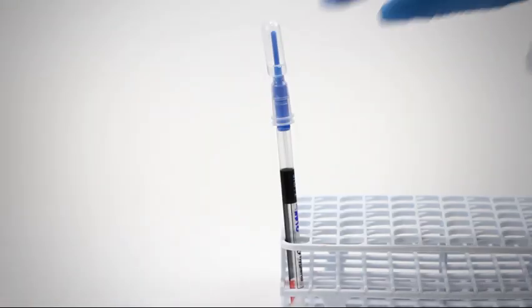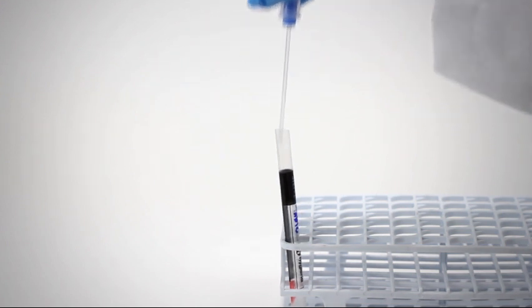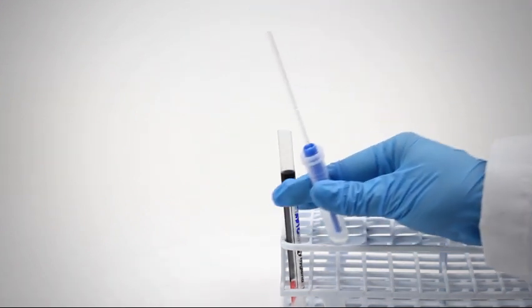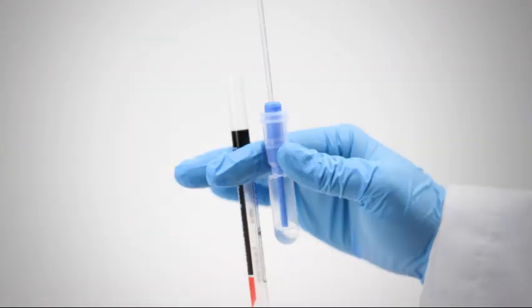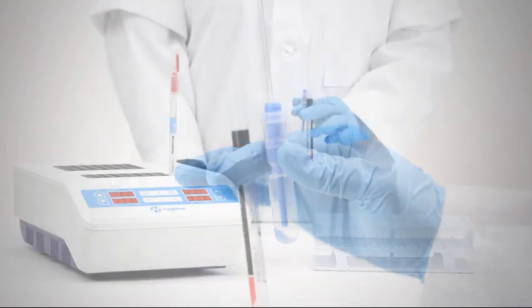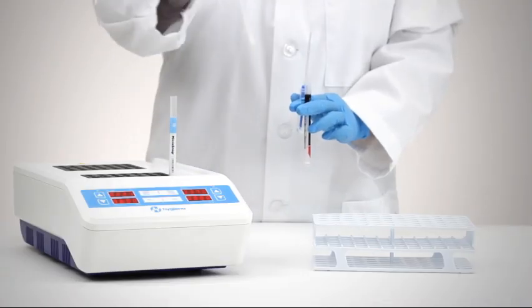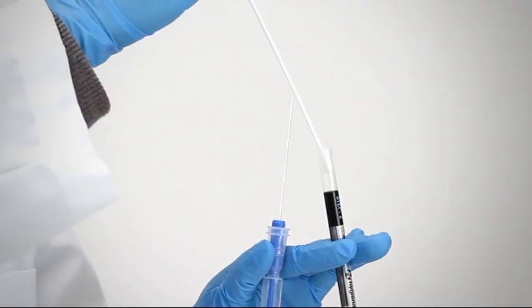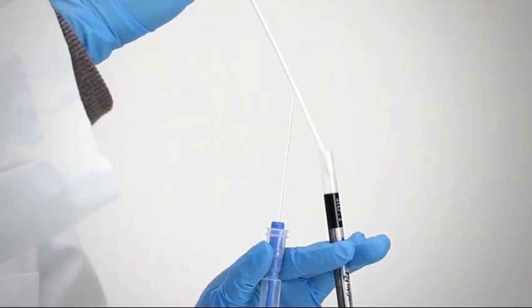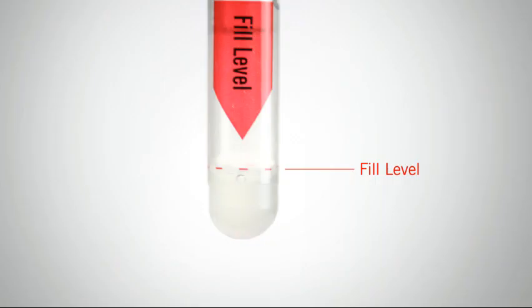With one hand, carefully grab the detection device bulb with your thumb and forefinger. Then, using your forefinger and middle finger, grab the detection device tube. Using your other hand, transfer the enriched sample from the enrichment device to the detection device. The detection device has a fill line marked on the bottom of the tube. Fill to this line.